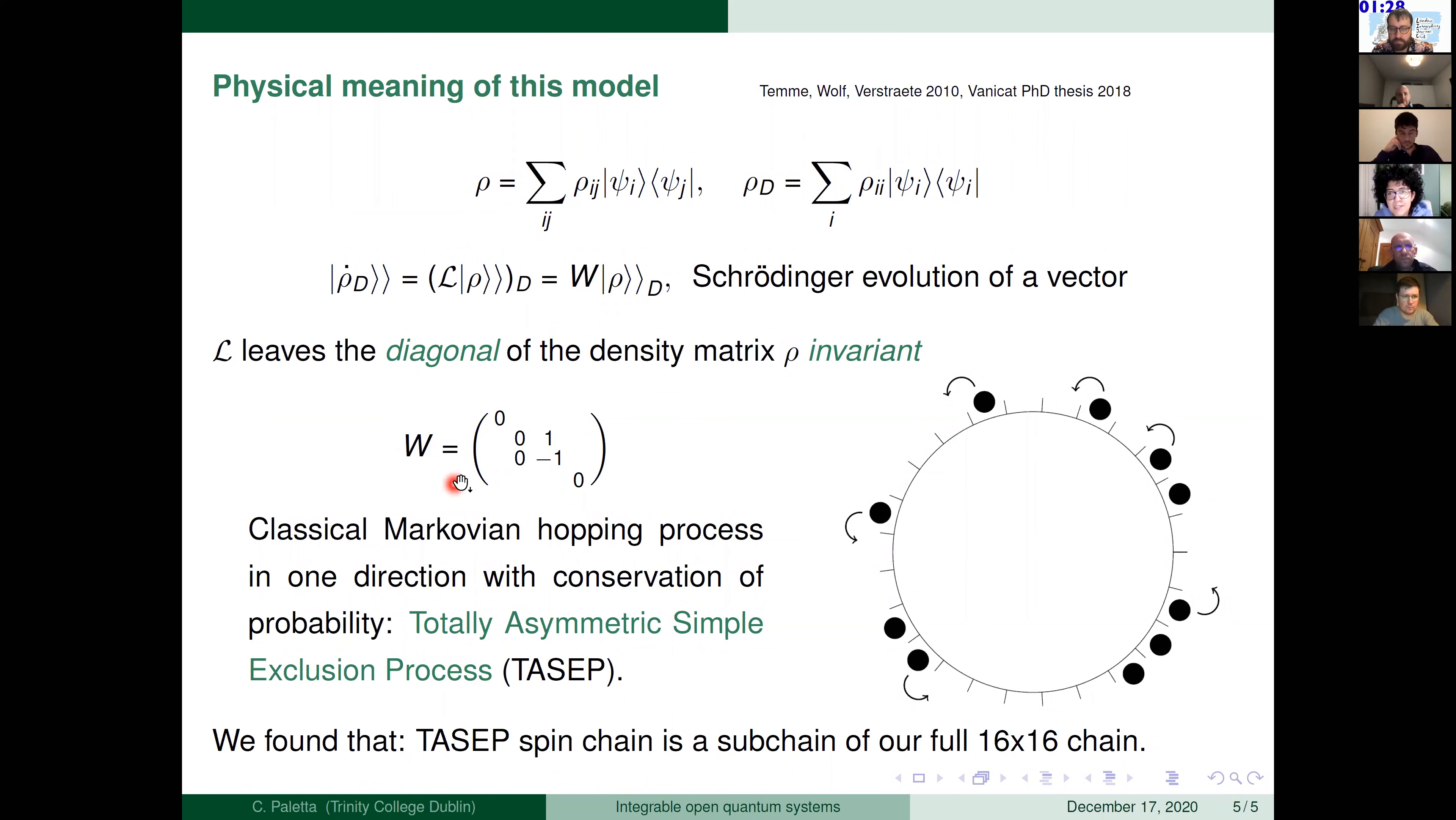And what is very nice is that this matrix describes a classical Markovian hopping process just in one direction due to the fact that this term here is one and this one is zero. So this tells that particles can only move in one direction as very pictorially is put here. So particles can only move to the adjacent site. There are no other particles and it can only move in one direction. And the fact that here we have a minus one says that the probability is conserved. And this model is called the TASEP that is the totally asymmetric simple exclusion process.